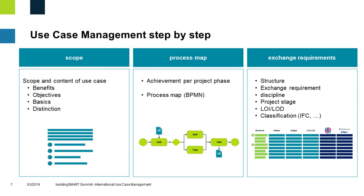How does the use case management work? Basically three steps: Step one is the scope — you describe the use case, its content, benefits, objectives, and distinctions. Step two, the main work, is the process map based on the BPMN standard, which yields the information requirements and exchange requirements. Step three takes those exchange requirements and lists them in a structured way per discipline and per project stage, then classifies the information to IFC or any other classification system.